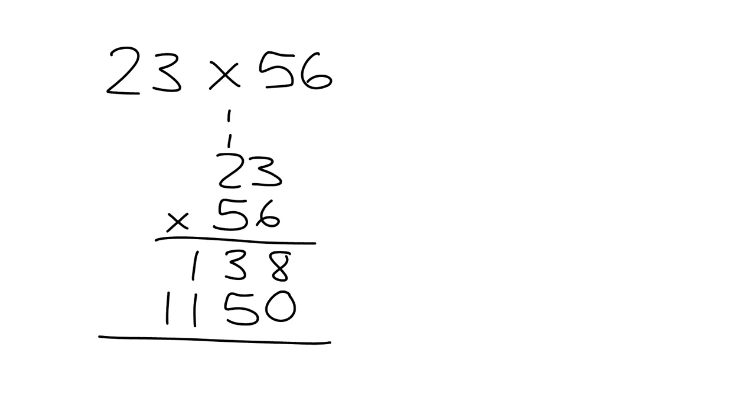And now I just need to add up. 8 and 0 is 8. 3 and 5 is 8. 1 and 1 is 2. 1 and 0 is 1. And so my answer is 1,288.